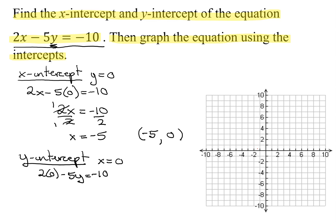Well, 2 times 0 is 0. 0 minus 5y just gives me negative 5y equals negative 10. Divide both sides by negative 5. And I get y equals negative 10 divided by negative 5 is positive 2.